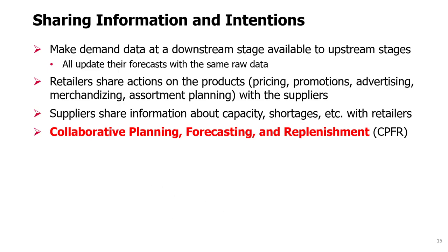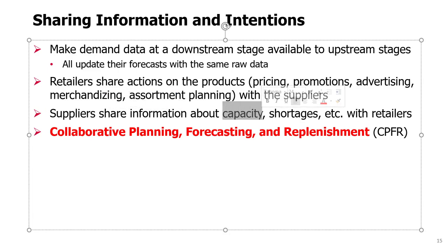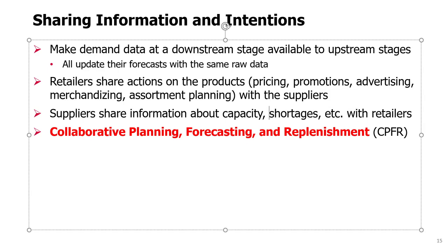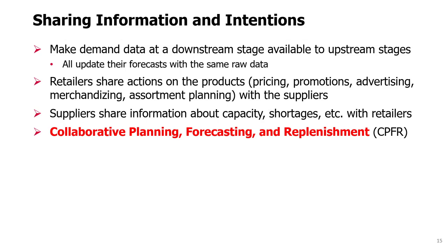Information sharing should go both ways. Suppliers might need to share information about upcoming capacity or a shortage of capacity with retailers, so that retailers can synchronize their actions — for example, knowing not to run a promotion for a product where a shortage is expected. This process of sharing information, intentions, joint planning, forecasting, and replenishment is called Collaborative Planning, Forecasting and Replenishment, or CPFR for short.